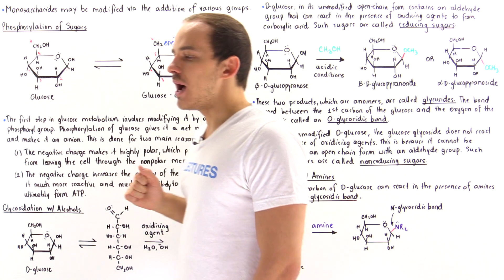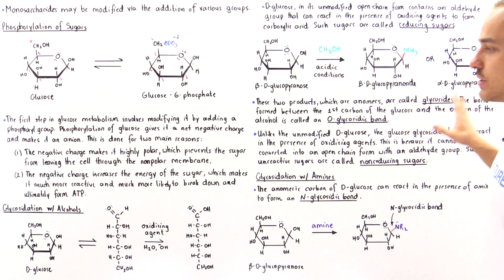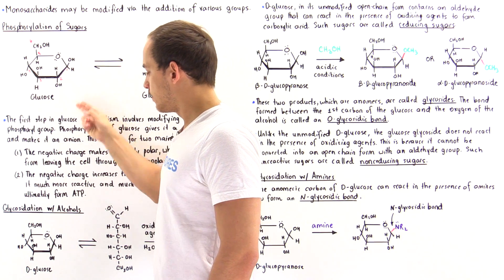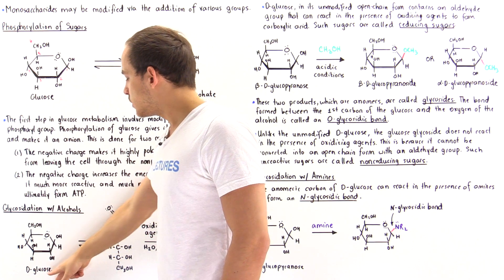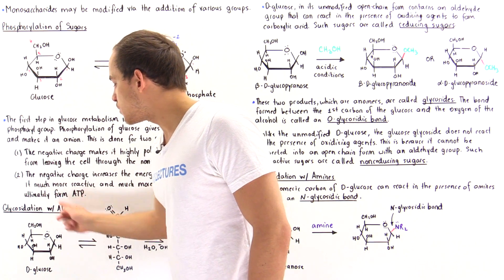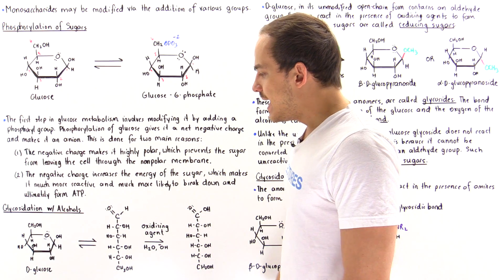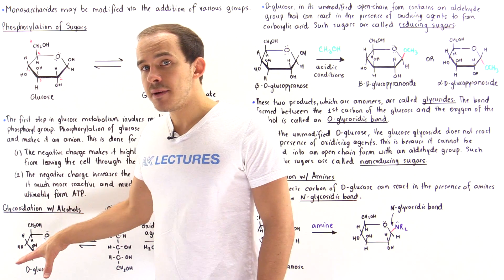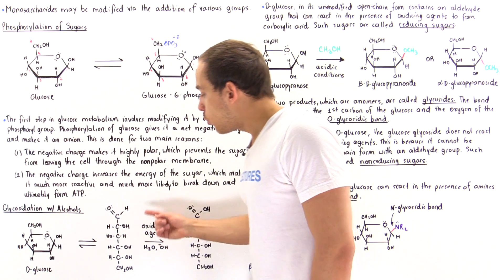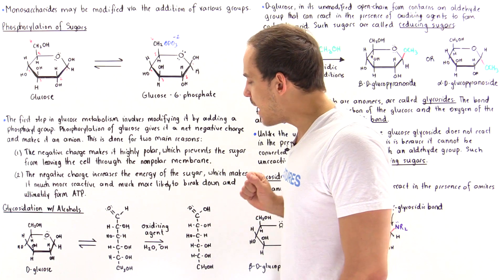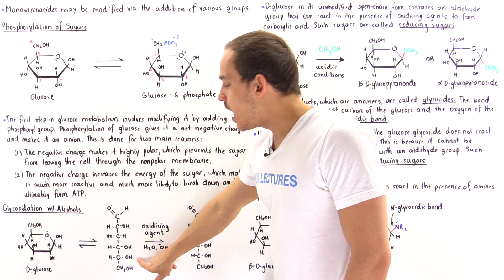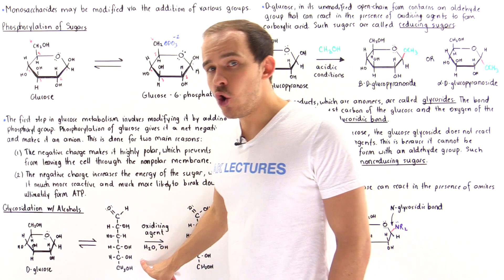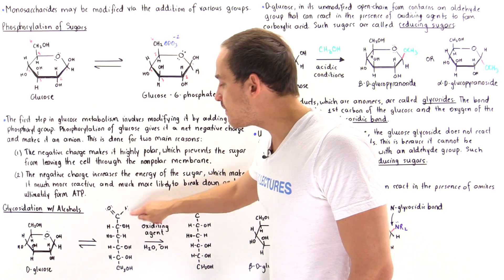Now let's move on to the process of glycosidation. We begin once again with the beta anomer of glucose — the beta-D-glucose molecule in its cyclic form. Even though the cyclic form is more stable and predominates at equilibrium, we still form a very tiny amount — less than 1% — of the open chain form of this D-glucose molecule. In the open chain, we see that we have an aldehyde.